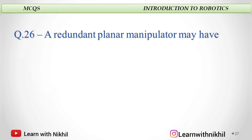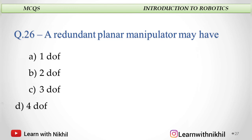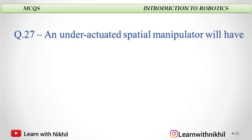A redundant planar manipulator may have — one DOF, two DOF, three DOF, or four DOF? A redundant planar manipulator has more degrees of freedom than the required one. For a planar manipulator, we require three degrees of freedom. Redundant means excess degrees of freedom, so four DOF is considered redundant for a planar manipulator.